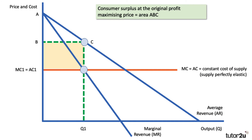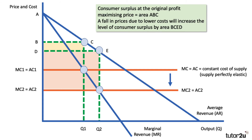Here's the consumer surplus argument. There was the initial consumer surplus ABC. With lower costs, the price falls from B to D and output expands from Q1 to Q2. So a fall in price will increase consumer surplus by B, C, E, D.